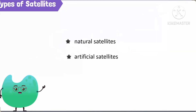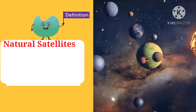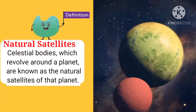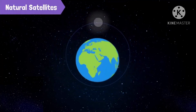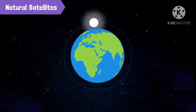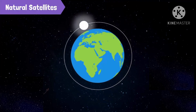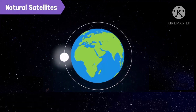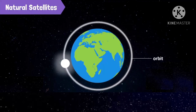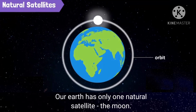Natural satellites are celestial bodies which revolve around a planet. These are known as the natural satellites of that planet. Our Earth has only one natural satellite — the Moon.